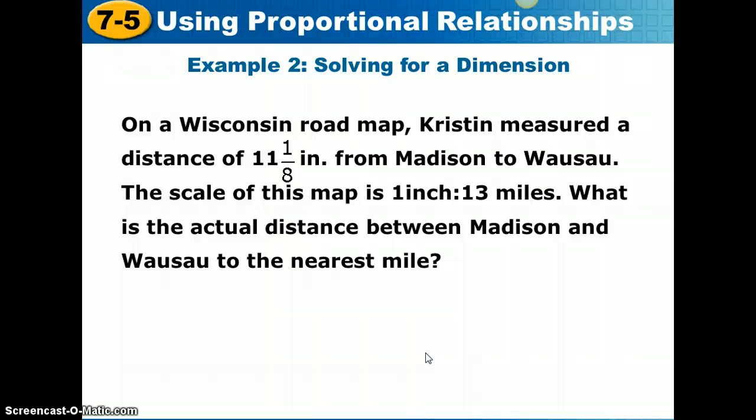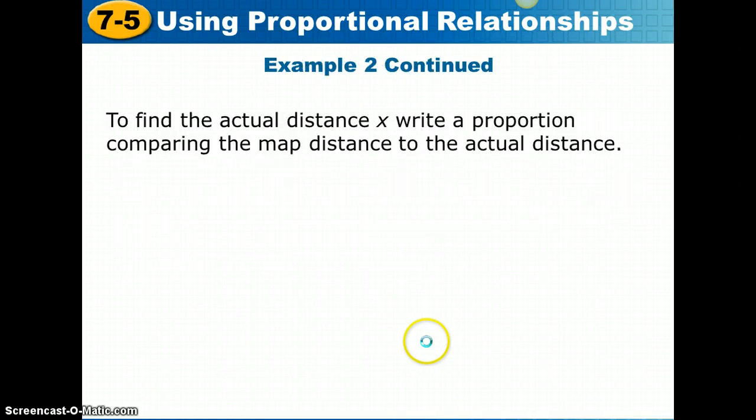Here's our first example about a scale drawing. A Wisconsin roadmap. A roadmap is one example of a scale drawing. On a Wisconsin roadmap, Kristen measured a distance of 11 and 1 eighth inches from Madison to Wausau. The scale of this map is 1 inch to 13 miles. That means every 1 inch on the map represents 13 miles of actual distance. What is the actual distance between Madison and Wausau to the nearest mile? To find the actual distance x, we're going to write a proportion comparing the map distance to the actual distance.